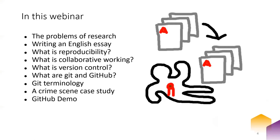In this webinar we'll cover the problems generally of research. We'll write an English essay together and point out the flaws in our usual approach to writing. We'll discuss reproducibility, collaborative working, and version control. We'll introduce Git and GitHub, as well as key terminology. We'll explore a crime scene metaphor, and finally we'll end on a demo using GitHub Desktop.